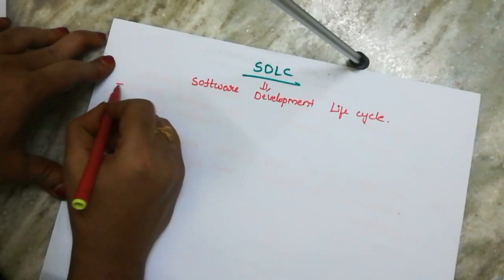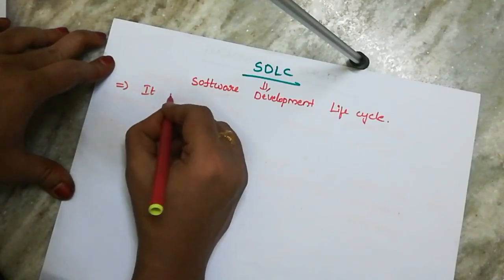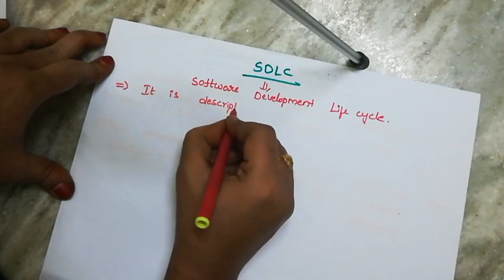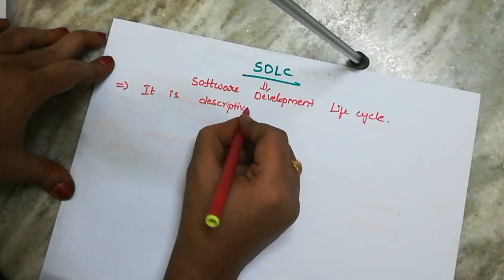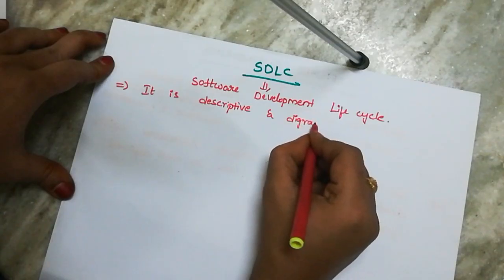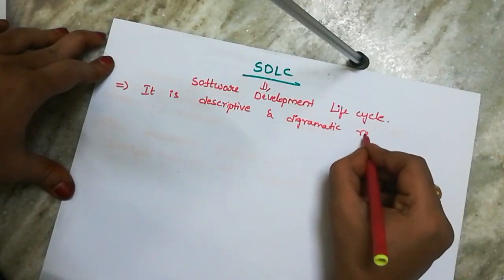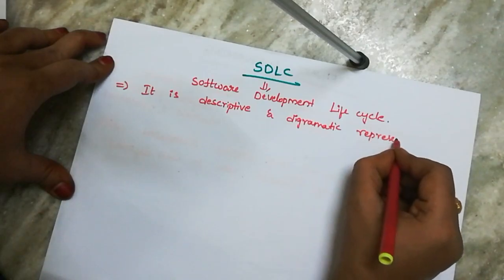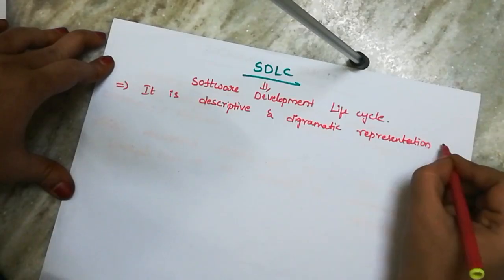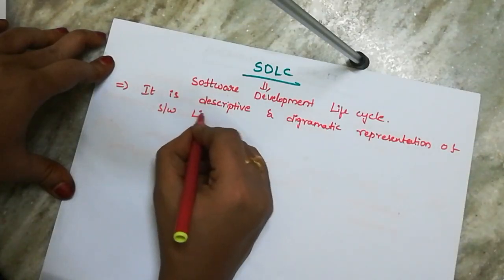So Software Development Life Cycle — look at the definition. It is a descriptive and diagrammatic representation of the software life cycle.